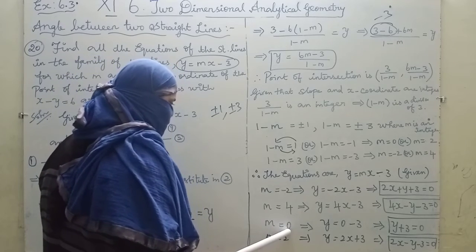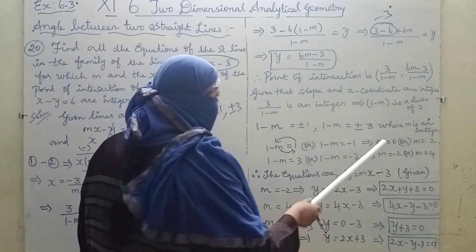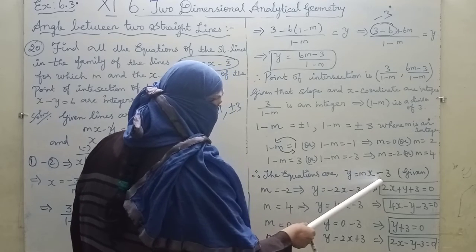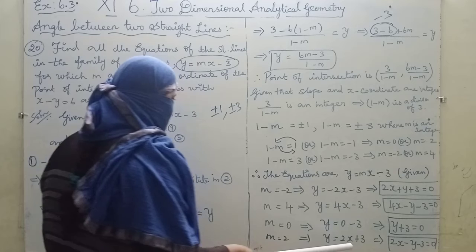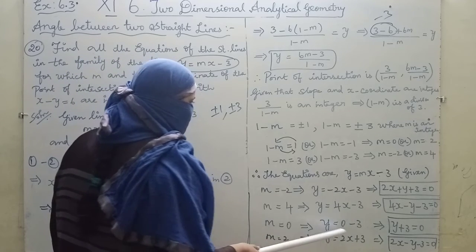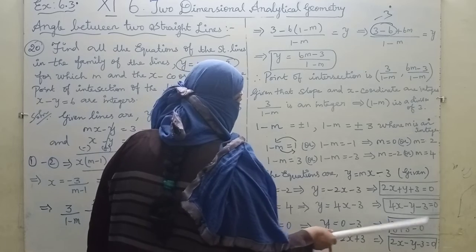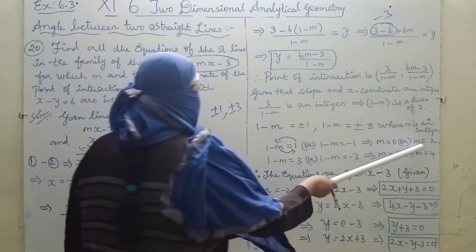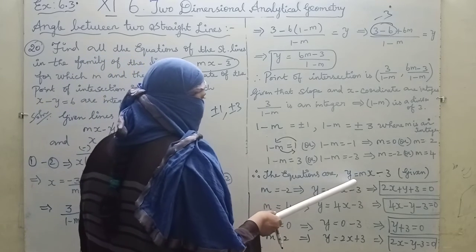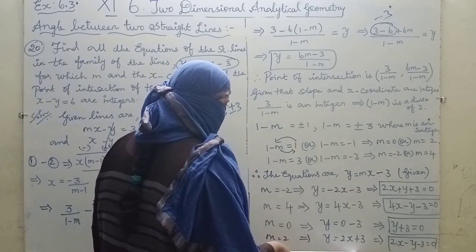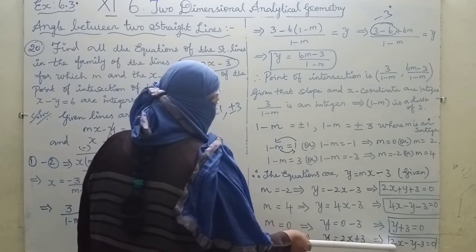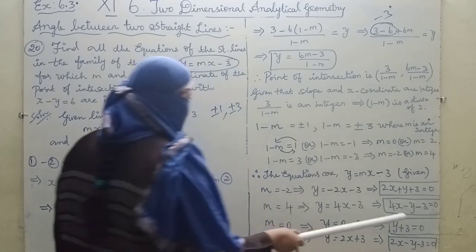For m = 0, the equation is y = -3. For m = 2, the equation is y = 2x - 3, which rearranges to 2x - y - 3 = 0.